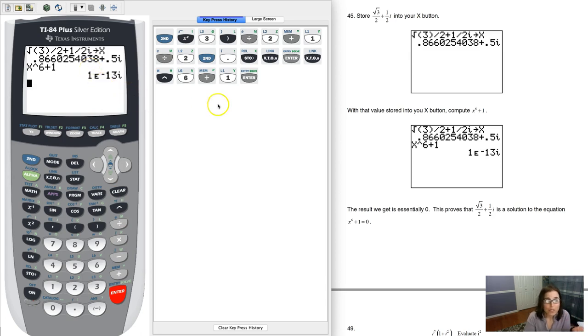Or is 1e negative 13i. And what that's trying to say is it's the number 1 times 10 to the negative 13th i, but essentially it's 0.